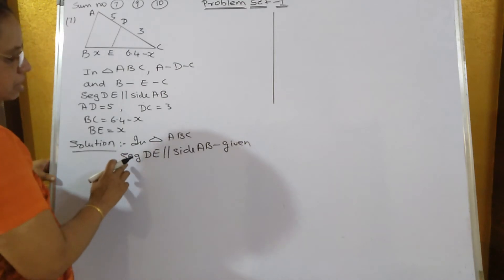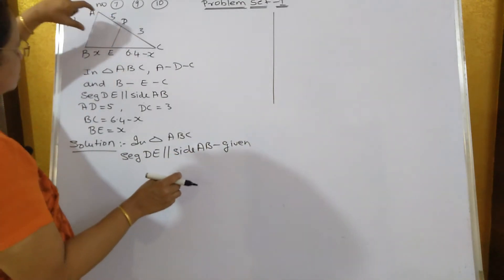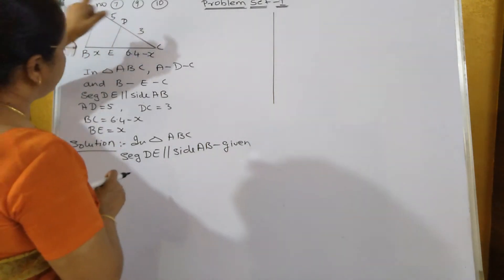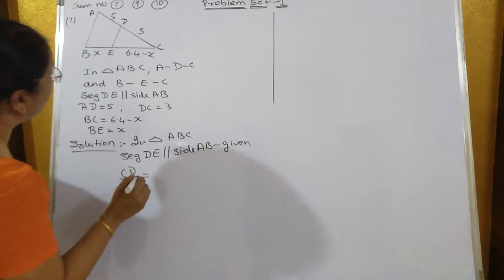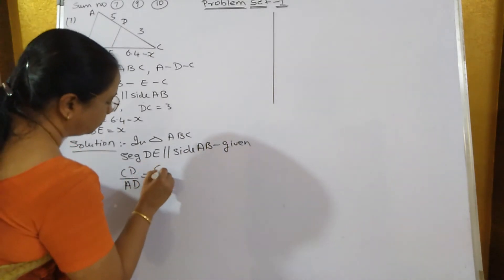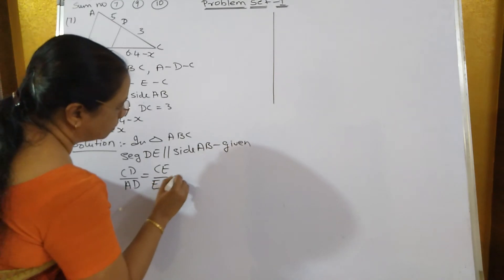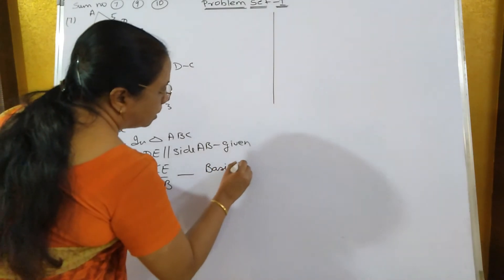In triangle ABC's segment DE is parallel to side AB that is already given DE is parallel to AB. Therefore, by basic proportionality theorem CD upon AD is equal to CE upon EB. Basic proportionality theorem.